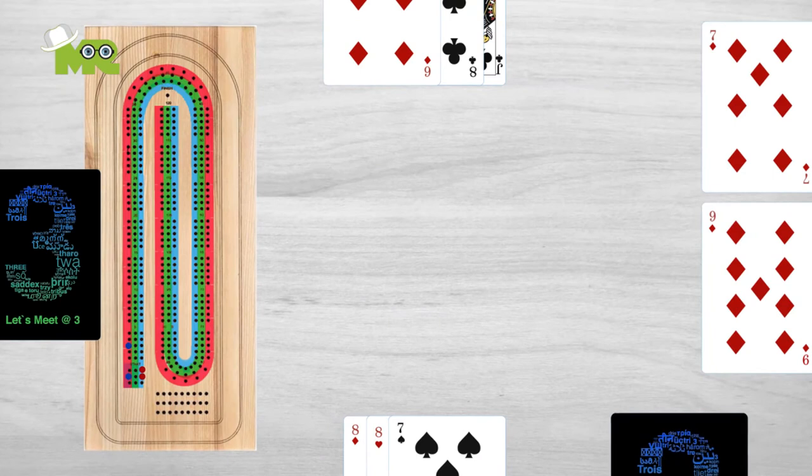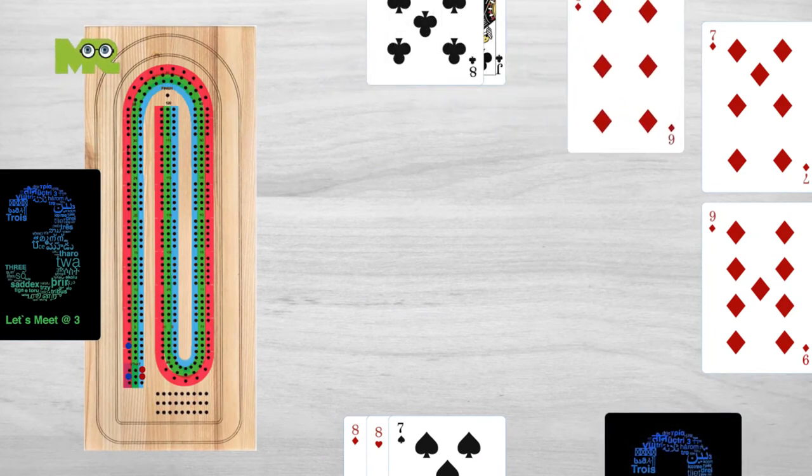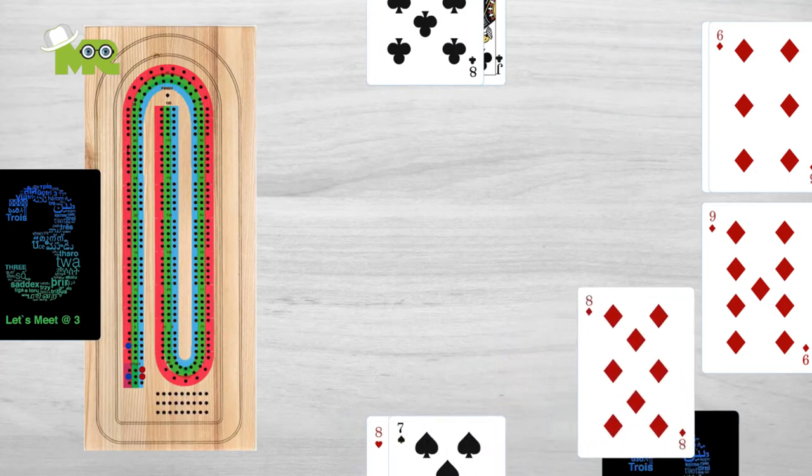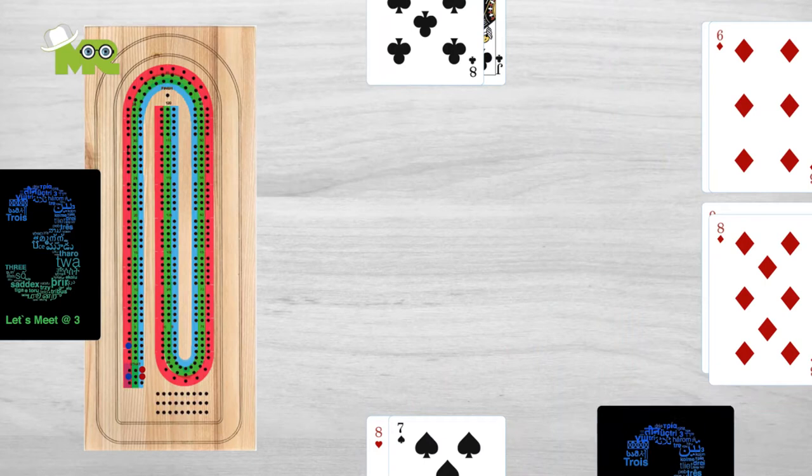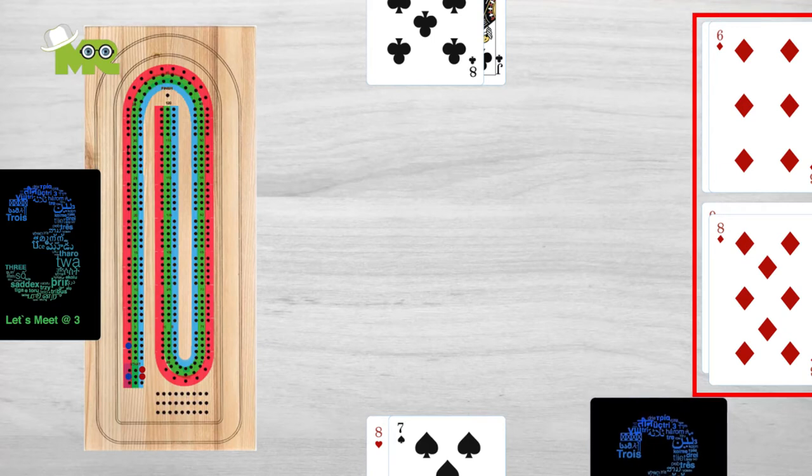The game begins with the non-dealer playing a card from their hand to a face-up pile in front, followed by the dealer playing their card in the same way. While playing, the total numeric value of each card dealt by both players should be added up starting from zero and adding the value of each card as it's played.